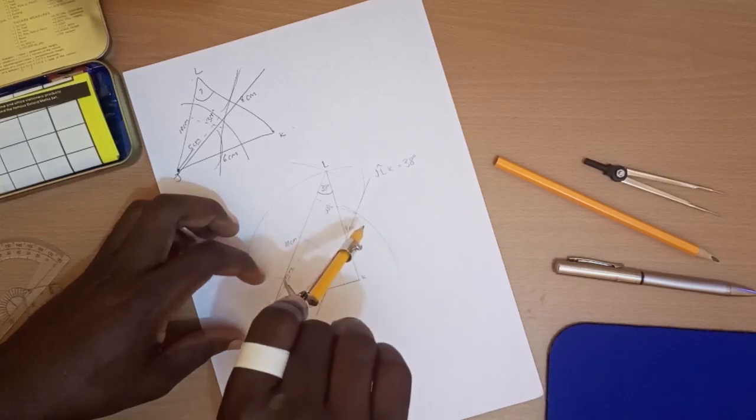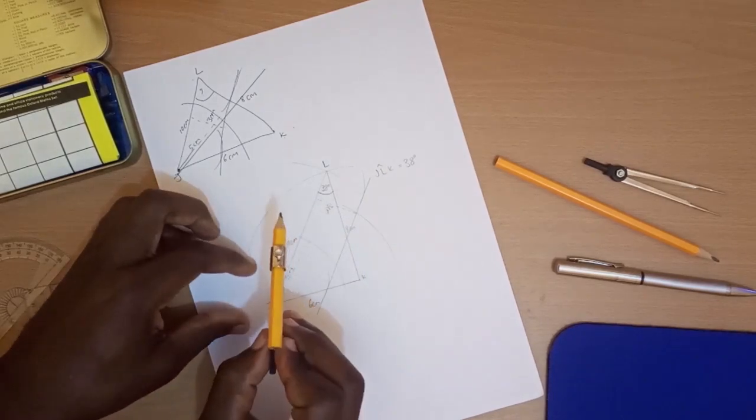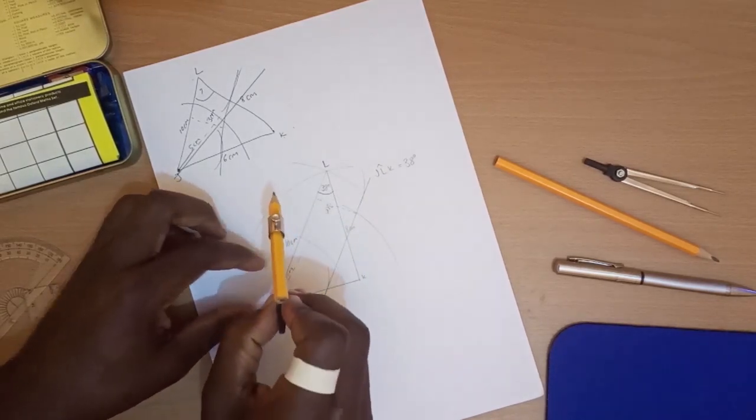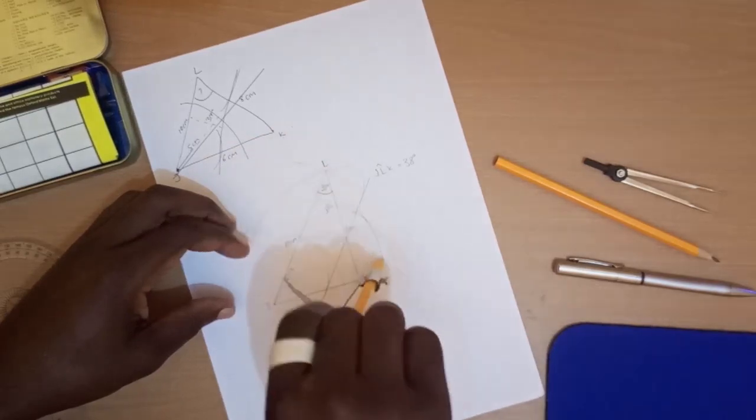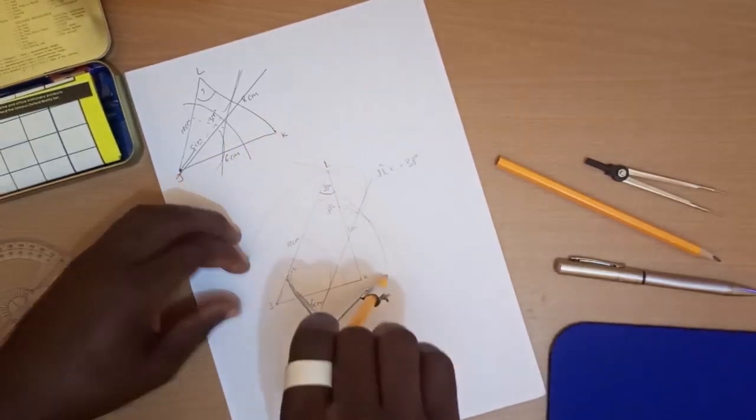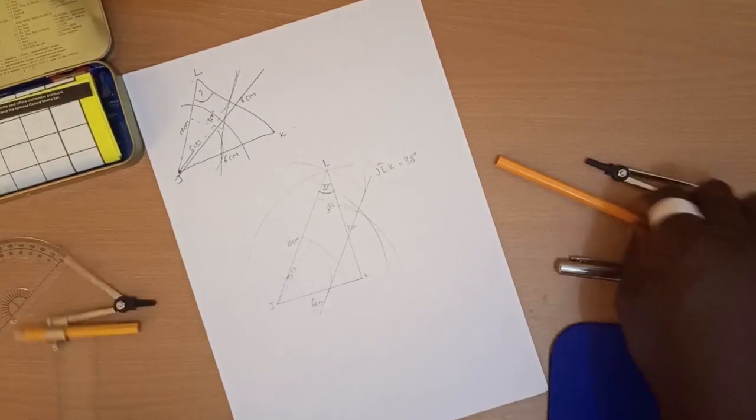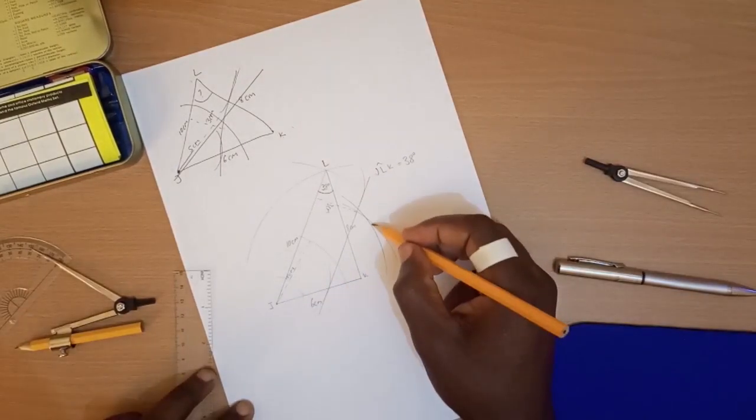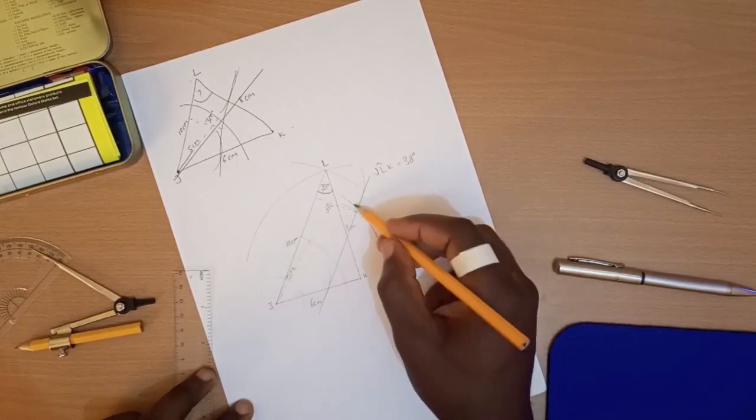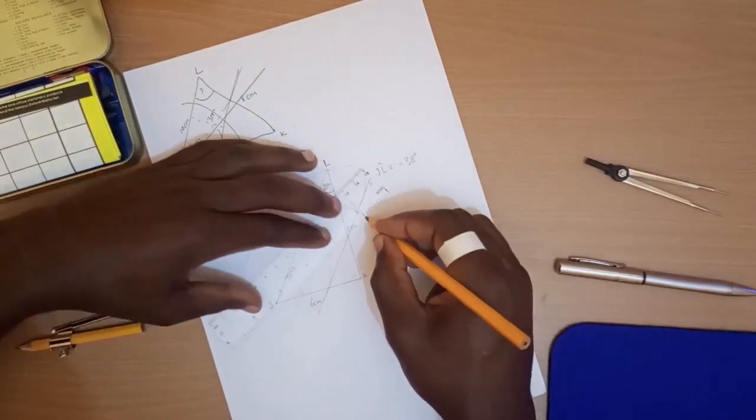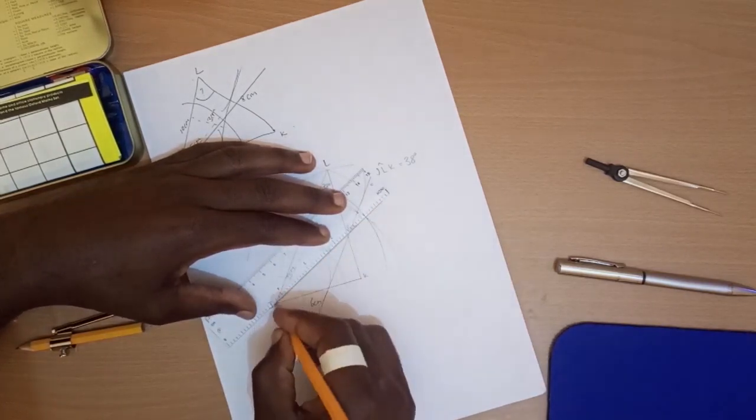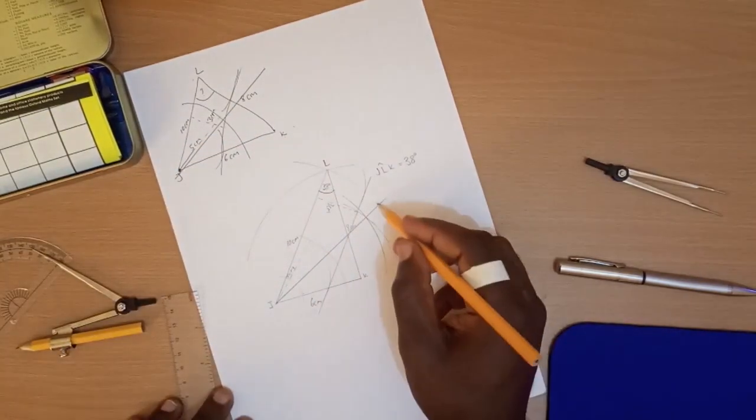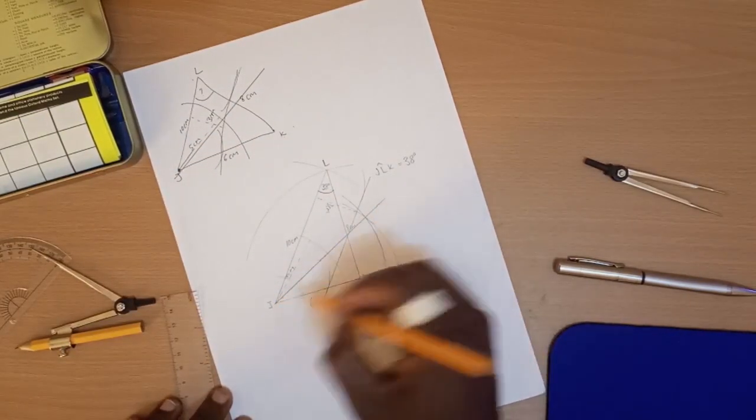Stand on the other side as well, on this small arc I've created, and do something like that. So when you stood there you drew this one, when you stood there you drew this one, and they met at that point. So that point is what you connect to J. So this line represents the equidistant of JK and JL.